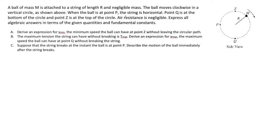When the ball is at point p, the string is horizontal. Point q is at the bottom of the circle and point z is at the top of the circle. At this level of physics, air resistance is negligible. Express all algebraic answers in terms of the given quantities and fundamental constants.